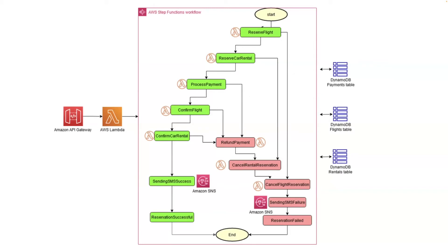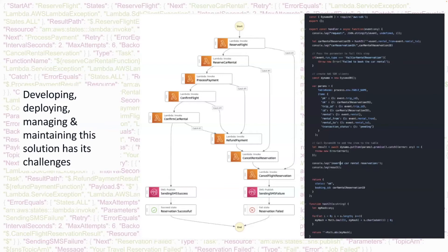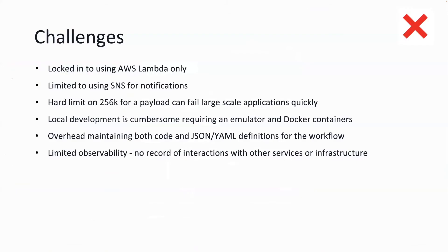This AWS Step Functions architecture is quite locked in, because Step Functions must run on Lambda. You have DynamoDB, SNS, and Lambda — which can work great but has challenges. First, for Step Functions you need to maintain two definitions of your system: one is JSON or YAML-based, which as a developer I don't like. You can't just have pure workflow-as-code. It always needs a JSON file that will grow as your code grows, creating overhead maintaining separate definitions.